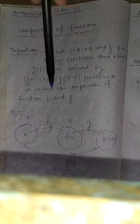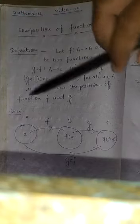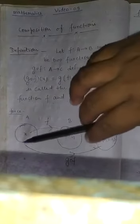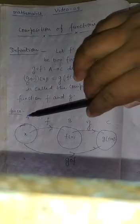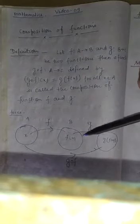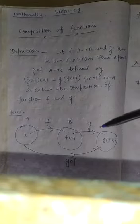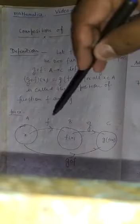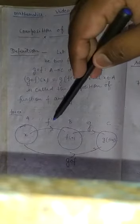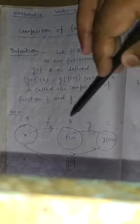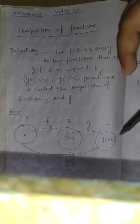For example: set A, set B with f(x), and g, set C with g(f(x)). This is the composition of function f. Here is f(x) and here is g: B to C, then here is g(f(x)).